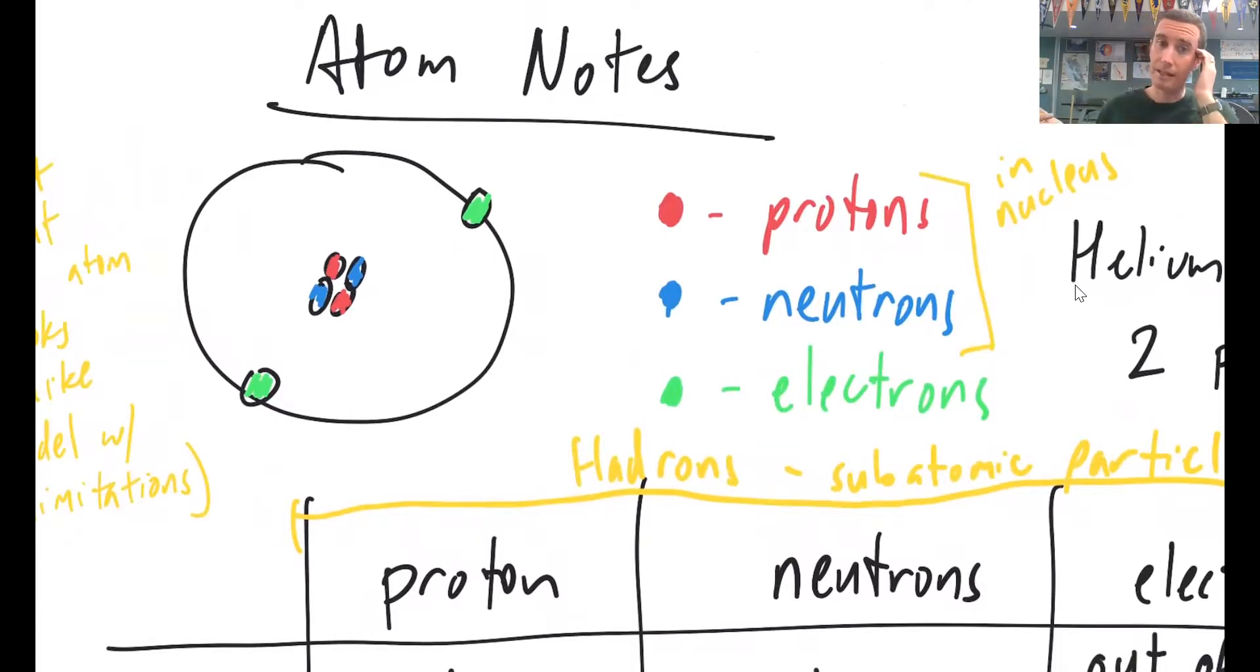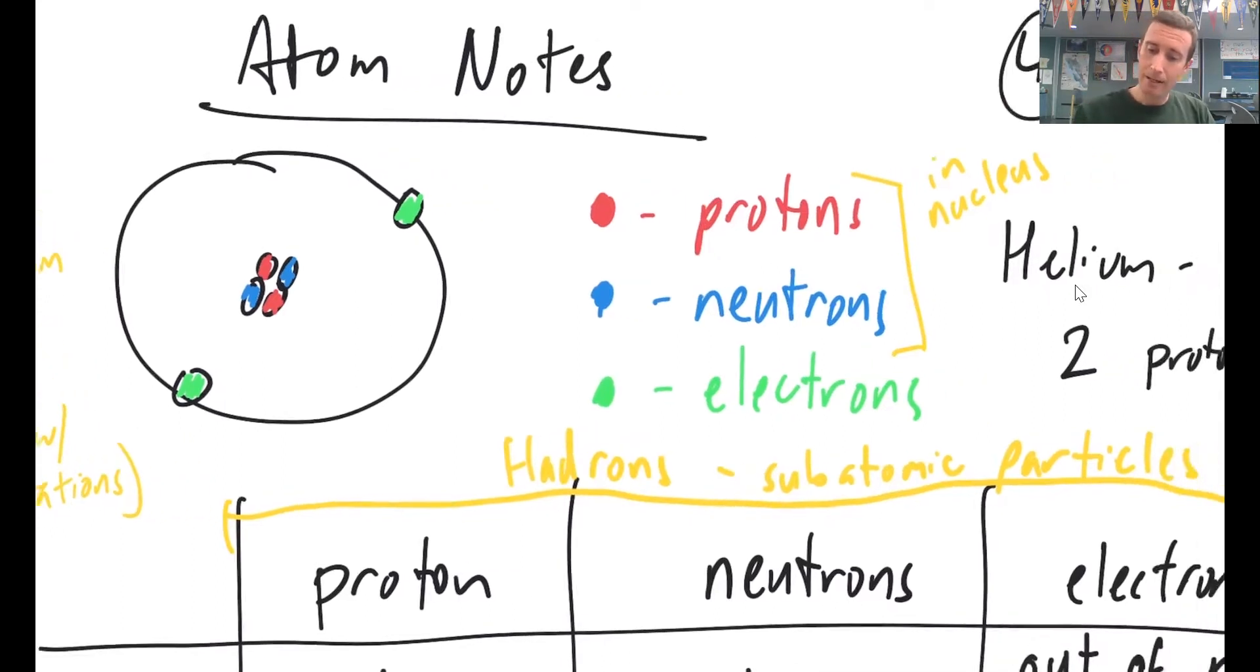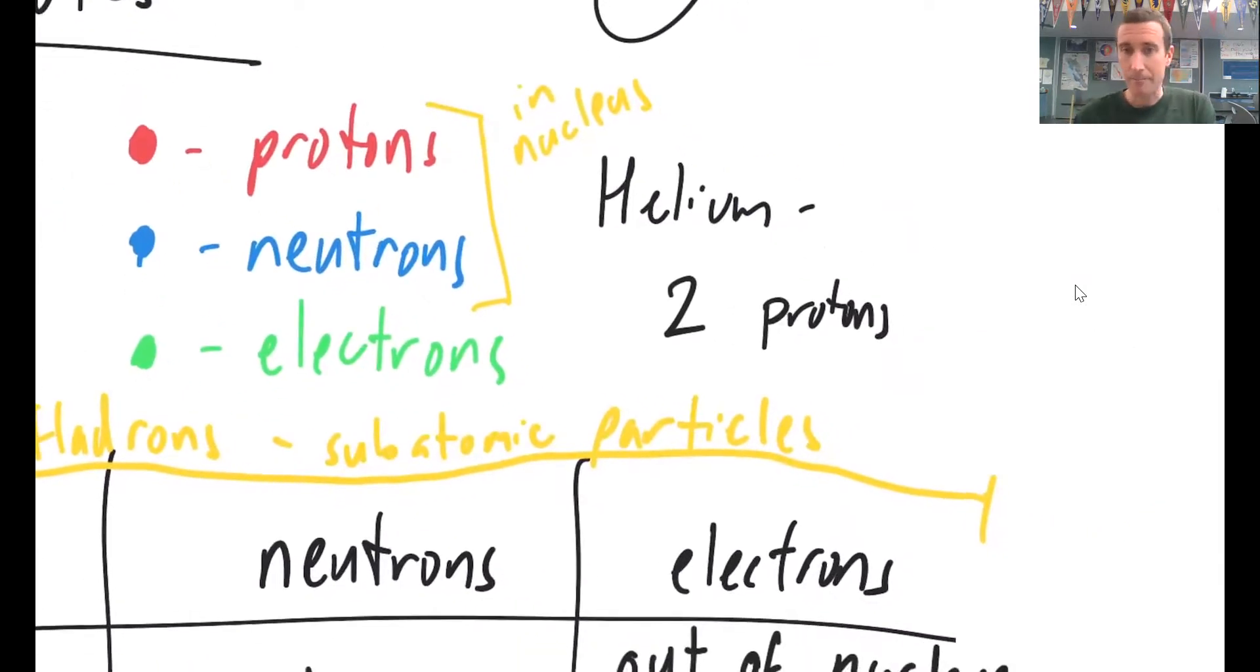And so in this atom, we have two neutrons, two protons, and two electrons. Let's see if anybody recognizes which element that might be. That element is helium. And the reason that we know that it's helium is because it has two protons.